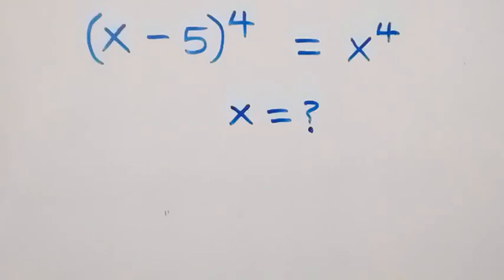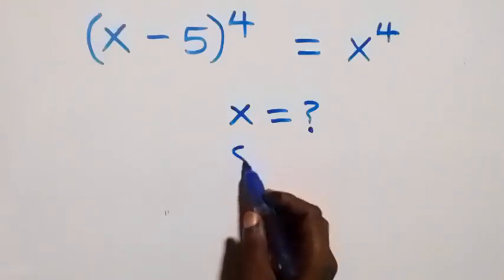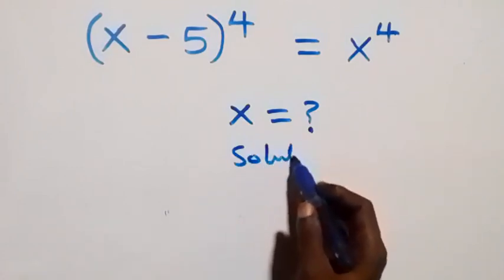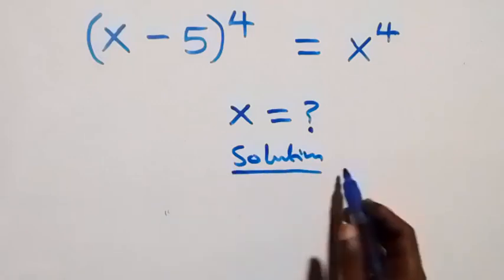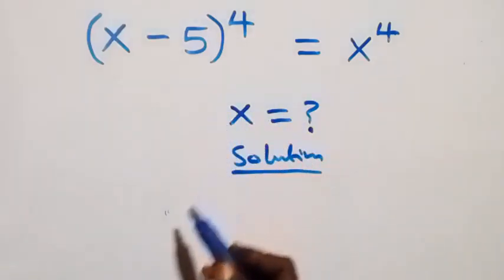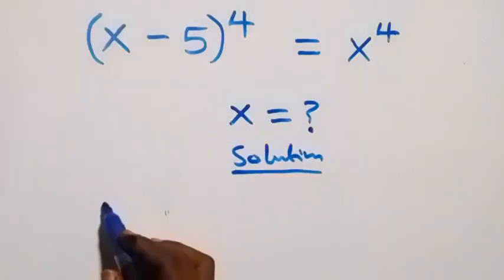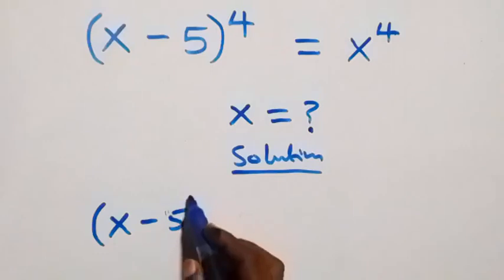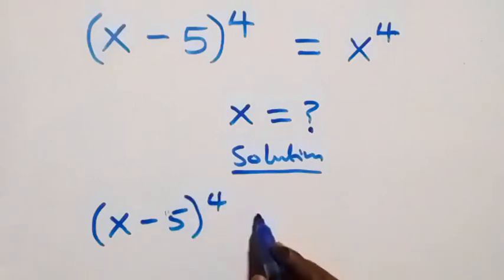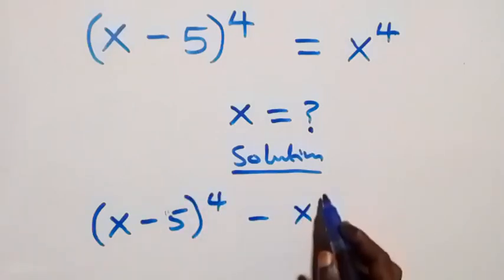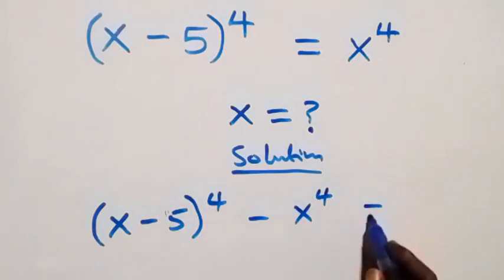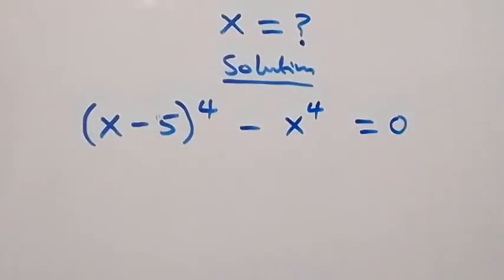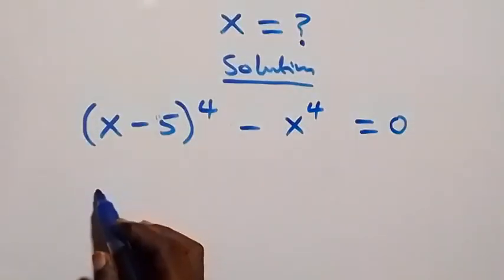Hello, you are welcome. How to solve this nice exponential problem. From what we have here, let's take x raised to power 4 to the left hand side, and this becomes x minus 5 raised to power 4, then minus x raised to power 4 equals to 0.